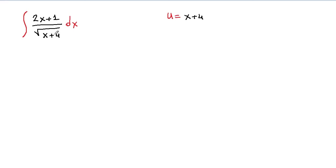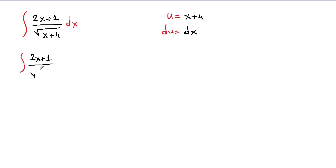You could also use square root of x plus 4 as u, but this is easier. Then du will be the derivative of x plus 4, which is 1·dx. So dx is equal to du, so you don't need to solve for dx. Now we're going to place everything in terms of u. We have 2x plus 1 on the numerator, and square root of u on the denominator, because x plus 4 is our u. And instead of dx, we write du.